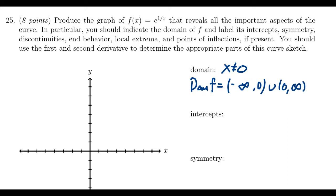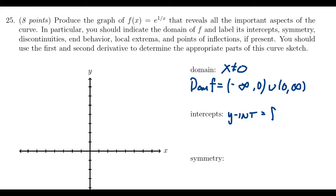What about x and y-intercepts? The y-intercept is always easiest — we just look at f of 0, but that does not exist because it's outside the domain. So the y-intercept does not exist. Even if the y-intercept doesn't exist, you should comment that it doesn't exist.